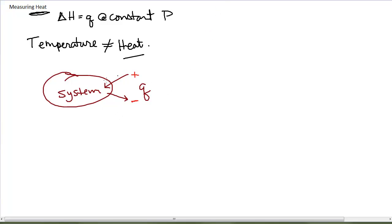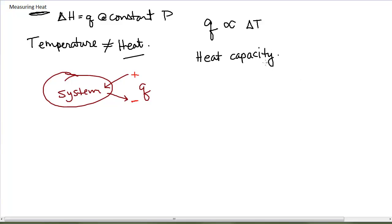We need a way to relate that change in temperature to the amount of heat. The heat is proportional to the change in temperature of the system as it relates to something called the heat capacity. The heat capacity of a substance is its capacity to absorb or release heat. It usually has units of joules per degree Celsius — defined as the amount of energy, in joules, required to raise the temperature by one degree Celsius.